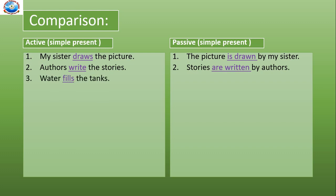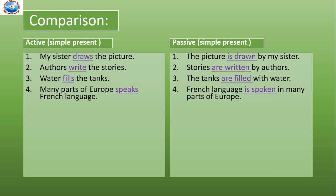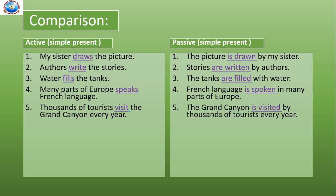Number three. Active: Water fills the tank. Passive: The tanks are filled with water. Active: Many parts of Europe speaks French language. Passive: French language is spoken in many parts of Europe. Thousands of tourists visit the Grand Canyon every year. Passive: The Grand Canyon is visited by thousands of tourists every year.